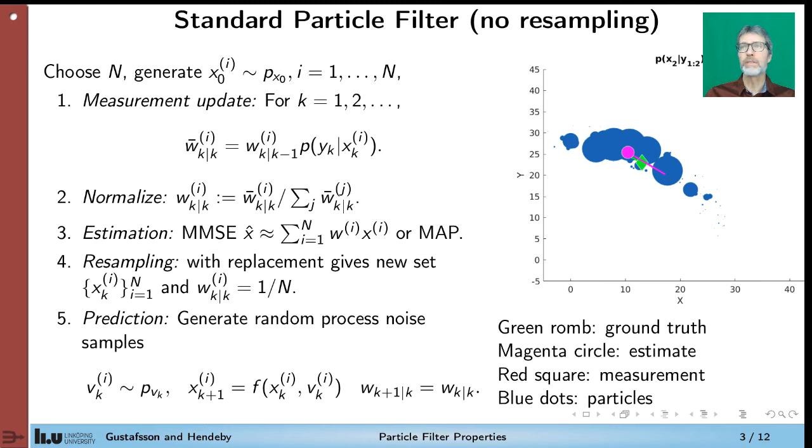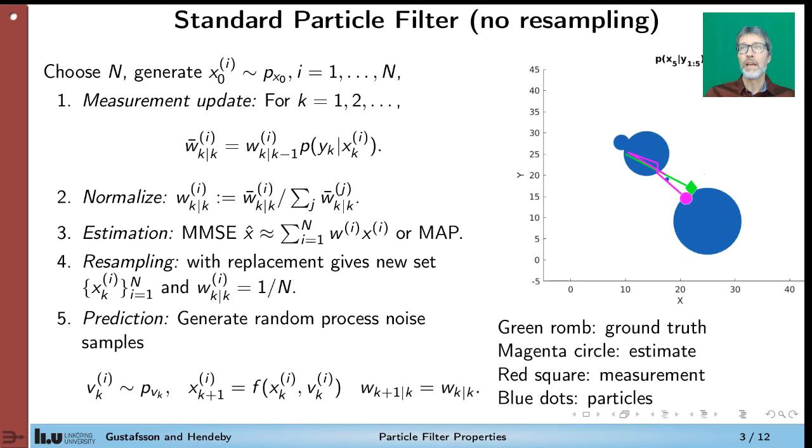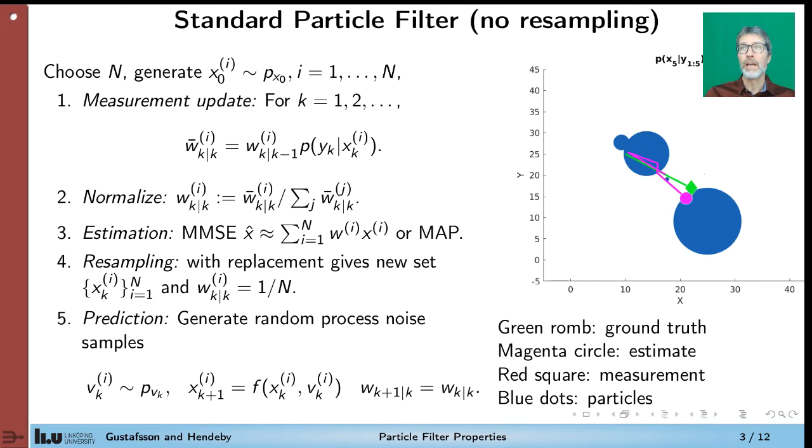We have six big circles and a few smaller ones. We proceed. Now we have one big circle. Two medium ones and some small ones. And if we continue with the fourth measurement update, now we have two particles with the big weight and a few which are still visible. And if we continue to the end we just have one particle left.